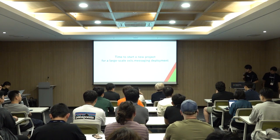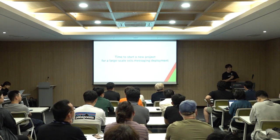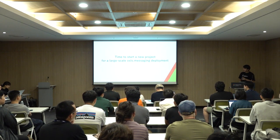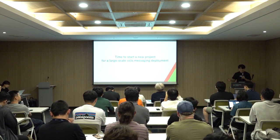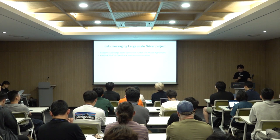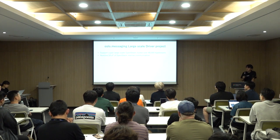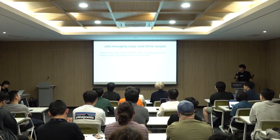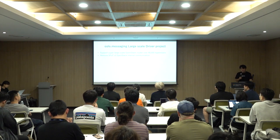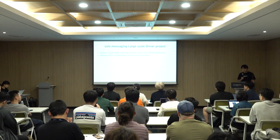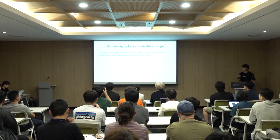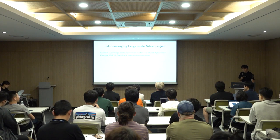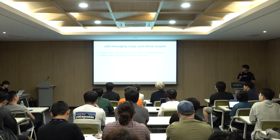Thank you — I really remember those sweet memories and kind of want to go back to that time. Anyway, it's time to start a new project for large-scale OSLO messaging deployment. For the OSLO messaging large-scale driver project, we defined two goals. One is to support a super-large-scale OpenStack cluster — over 40,000 hypervisors in one single cluster, not 14,000 but 40,000. And also, we want to remove the single point of failure of OpenStack internal communication like RabbitMQ.